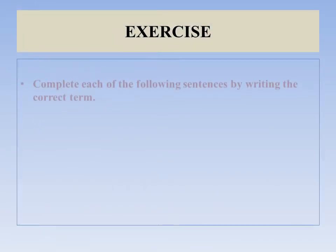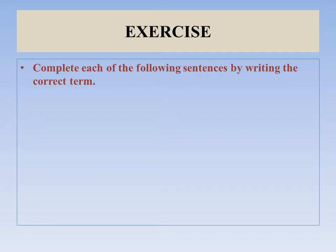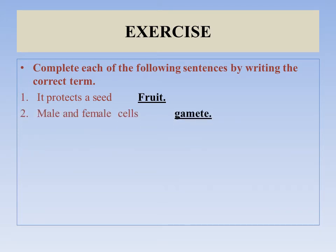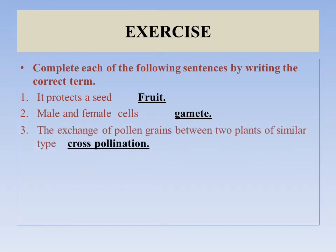Exercise: complete each of the following sentences by writing the correct term. Number one: it protects a seed — it protects the fruit. Male and female cells are called gametes. The exchange of pollen grains between two plants of the same type, when pollen grains transfer, is basically cross-pollination.